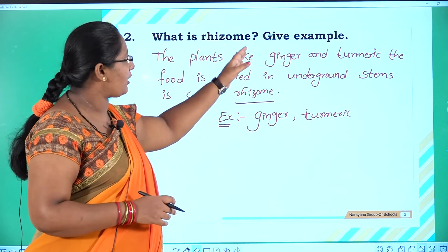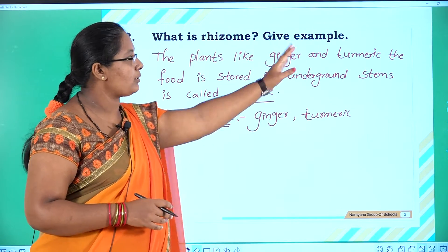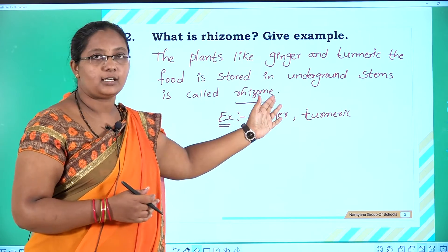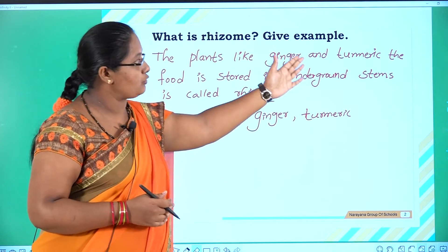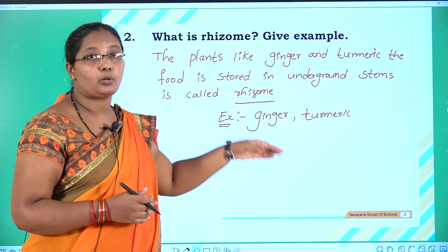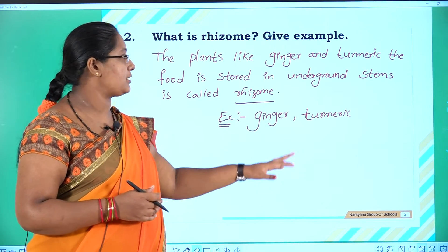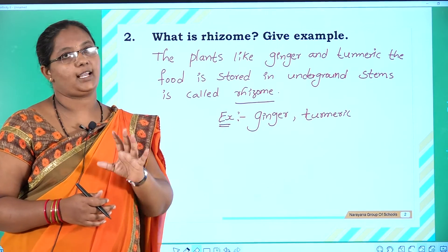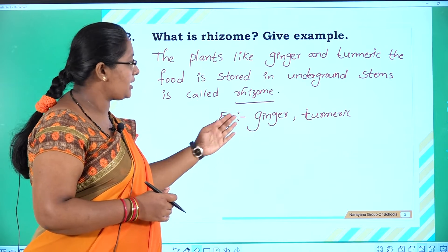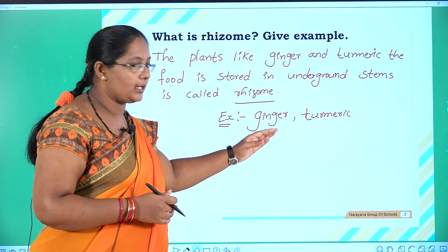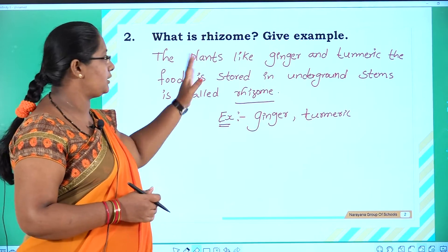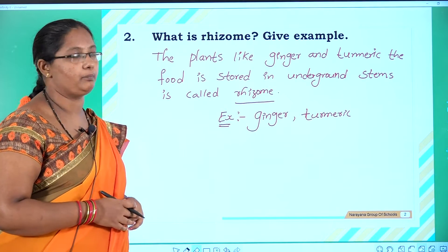Second question: What is a rhizome? Give examples. In plants like ginger and turmeric, food is stored in underground stems — these are called rhizomes. Ginger and turmeric are the best examples of rhizomes.